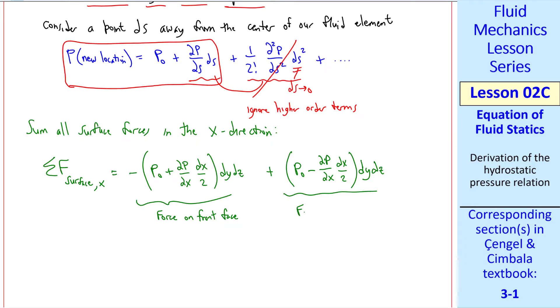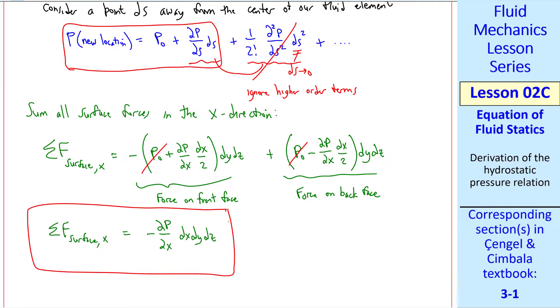For the back face, we have no negative sign. But we did have a negative sign here. The area is also dy dz. That's the area of the back face. So pressure times area, again, is force. So this is the force on the back face. Well, these two terms cancel. And these two terms add up. And thus we have sigma f surface in the x direction is negative del p del x dx dy dz.